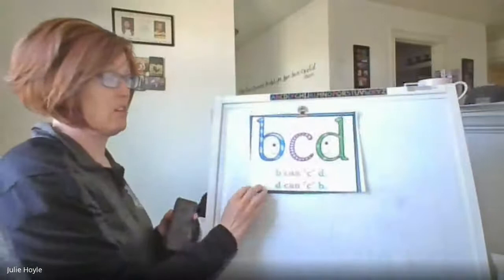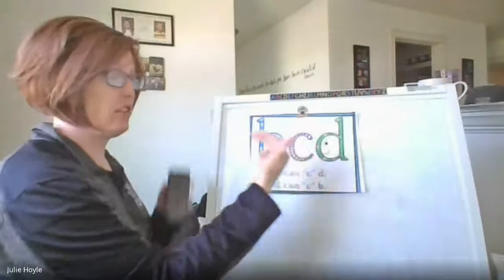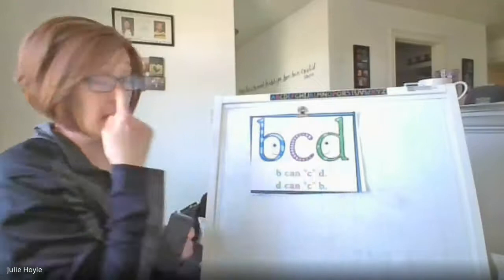Another way that you can tell these apart is b can see d. That helps if they're together. If they're looking at each other, b comes first. B can see d, so when you look at them in the alphabet, that's kind of a helpful one.